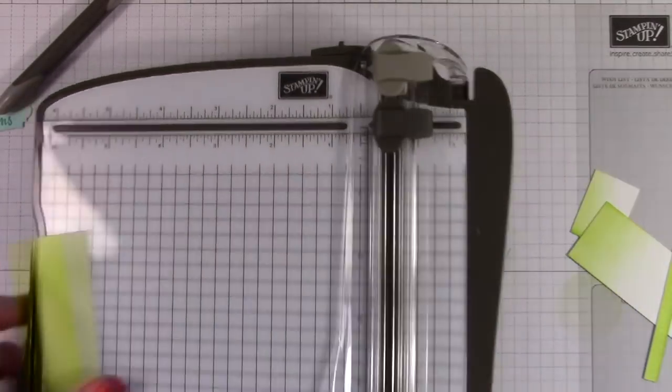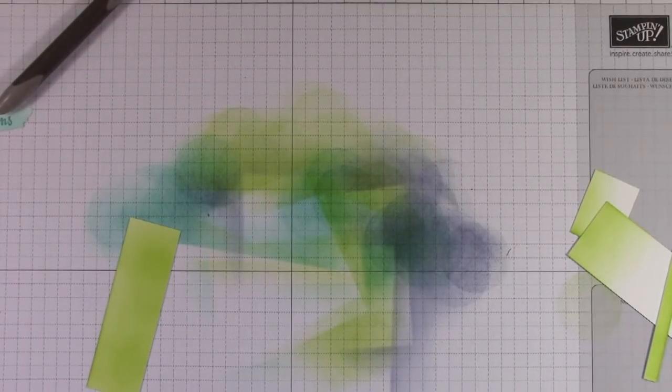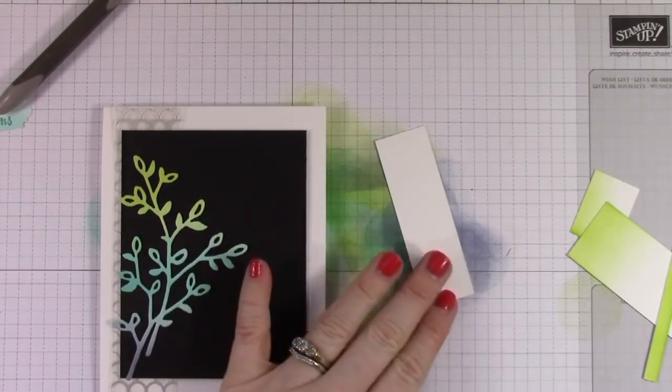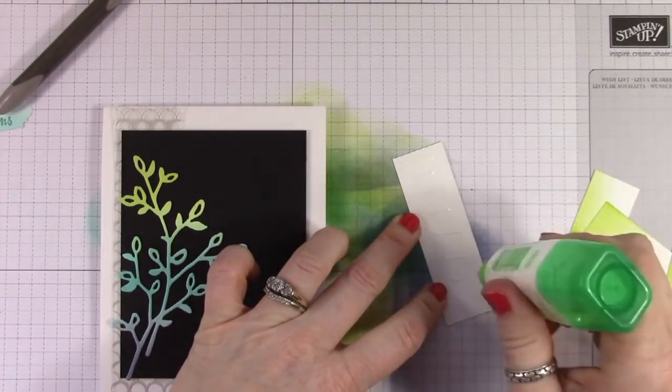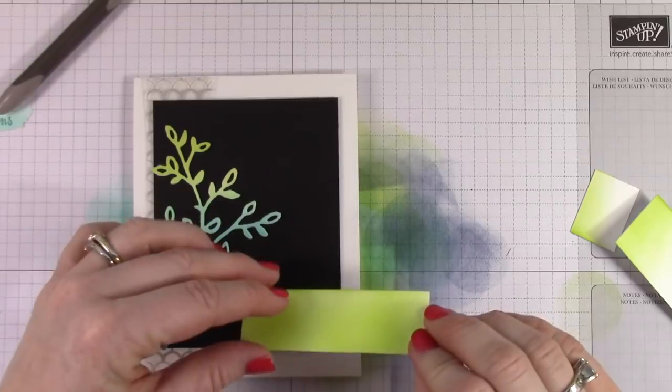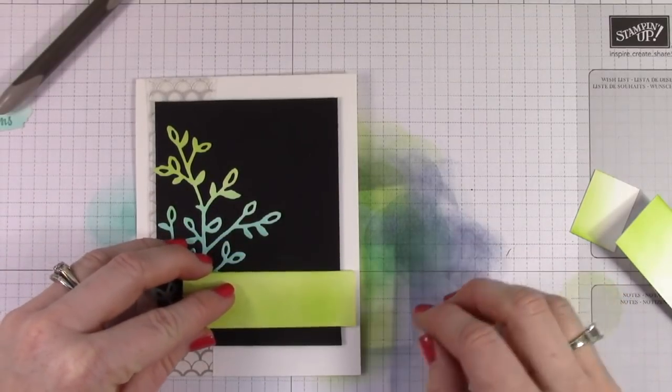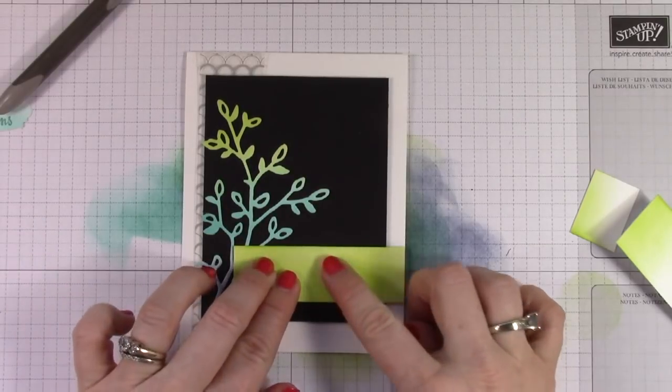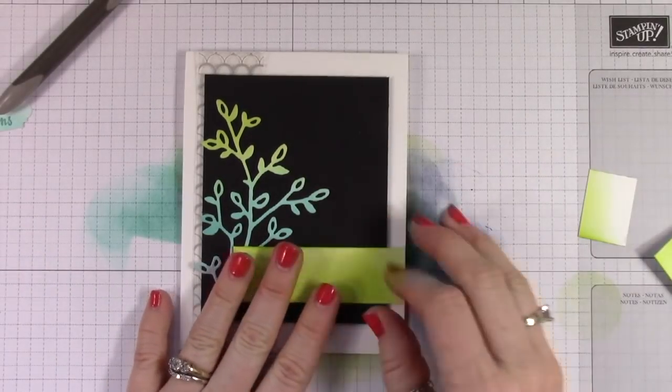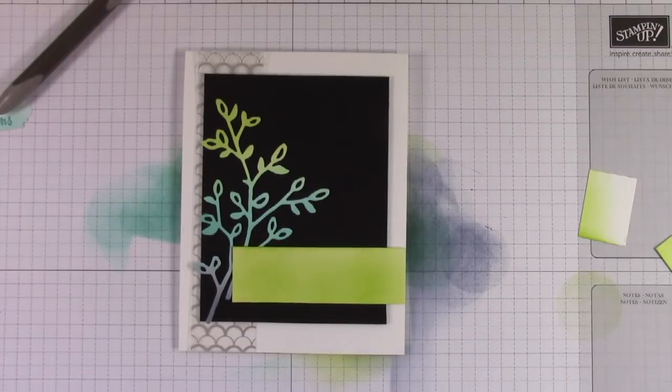So, I ended up with a three and a quarter by one inch piece of lemon-lime twist cardstock because I did the ink blending on top of it, and it does have a little bit of a different look. It's not exactly the same as a solid piece of cardstock, but for this card, it works really well because of the type of card it is.